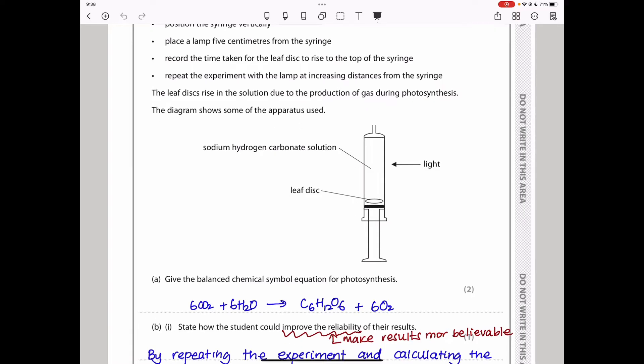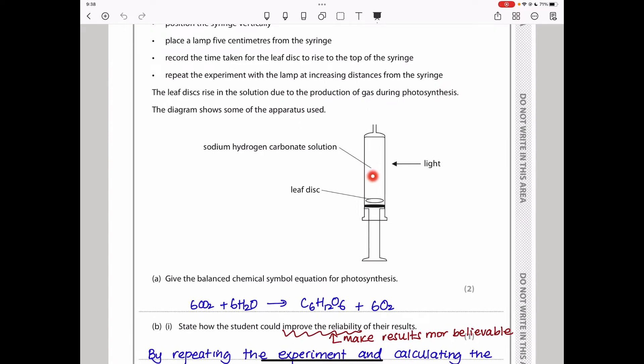Record the time taken for the leaf disc to rise to the top of the syringe, repeat the experiment with the lamp at increasing distances from the syringe. This part here shows that they are changing light intensity. When you change the distance of the lamp from the syringe, it shows you are varying the light intensity. The diagram shows some of the apparatus used. Here we can see the sodium-hydrogen carbonate solution. In here, we have the leaf disc, and the direction from which the light is coming from.